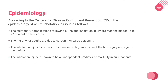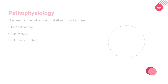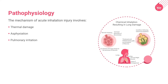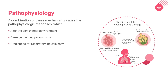The pathophysiology of acute inhalational injury covers three primary mechanisms that lead to injury through smoke inhalation: thermal damage, asphyxiation, and pulmonary irritation. A combination of these mechanisms causes pathophysiologic responses that alter the airway microenvironment with parenchymal damage and predispose smoke inhalation victims to respiratory insufficiency.